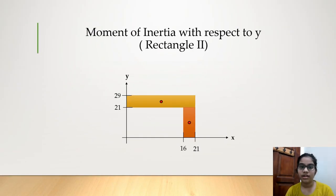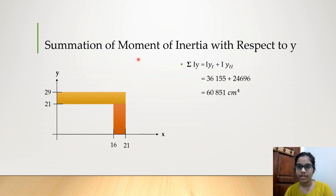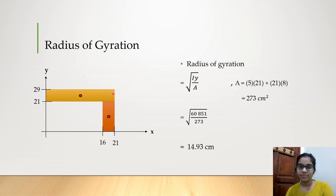Now we will discuss how to calculate the moment of inertia with respect to Y for rectangle 2. As mentioned earlier, the base is 21 cm and the height is 8 cm. We use the formula (1/12)bh³ to calculate the moment of inertia with respect to Y. After substituting the values, we got 24,696 cm⁴. Next is the summation of moment of inertia with respect to Y by adding IY1 and IY2 to obtain 60,851 cm⁴. This shows the total moment of inertia with respect to Y of the arm and forearm. The radius of gyration can be calculated using the formula square root of total moment of inertia with respect to Y divided by the area of the whole model which is 273 cm². The radius of gyration will be 14.93 cm. See you.